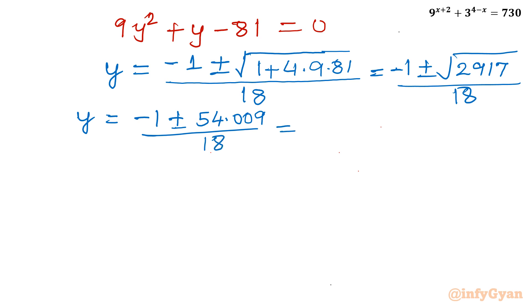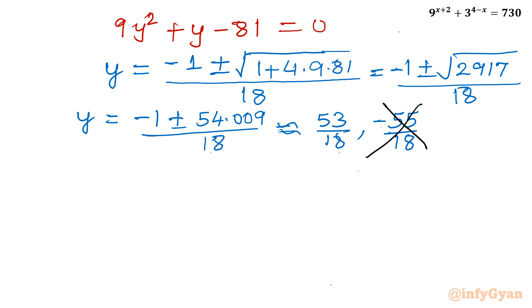So there are two values. Taking approximate values: one value is about 53 over 18, and the second would be a negative value, approximately minus 55 over 18. Since y equals 3 power x, the exponential function cannot be negative, so we reject the negative value. The only accepted value is approximately 53 over 18.